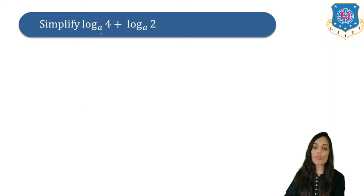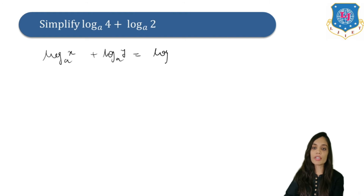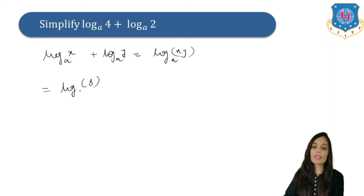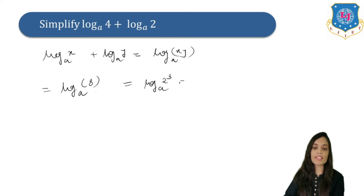Next example: we have log 4 to the base a plus log 2 to the base a. Applying the product formula, log x plus log y equals log xy, we multiply 4 into 2 to get log 8 to the base a. We can also write this as log 2 cubed to the base a, or simplify it as 3 log 2 to the base a. Any of these three forms are valid answers.